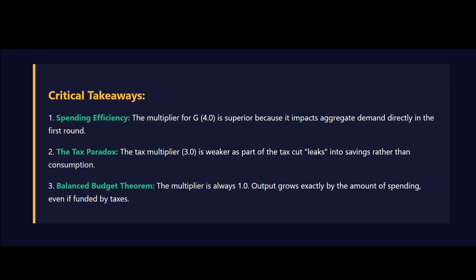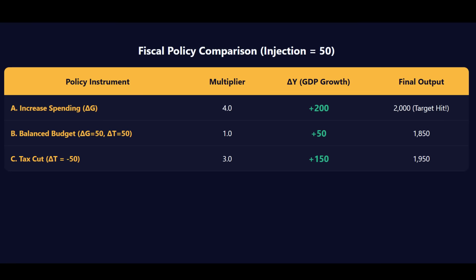That's not enough — it leaves a 50 unit gap and falls short. Why did 50 in spending give us 200, but 50 in tax cuts only gave us 150? It's the leakage, and it happens right at the beginning. When the government gives you a $50 tax cut, the very first thing you do — according to the model — is save 25% of it. A quarter of that 50, which is $12.50, immediately goes into the savings jar and never enters the spending stream on that first round. So the initial kick into the economy isn't the full 50 — it's only $37.50. And since that initial push is smaller, the final result is proportionally smaller.